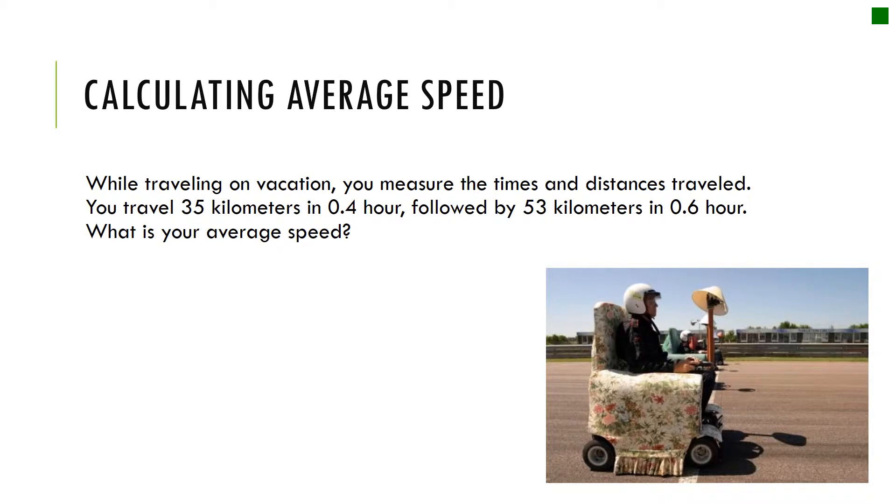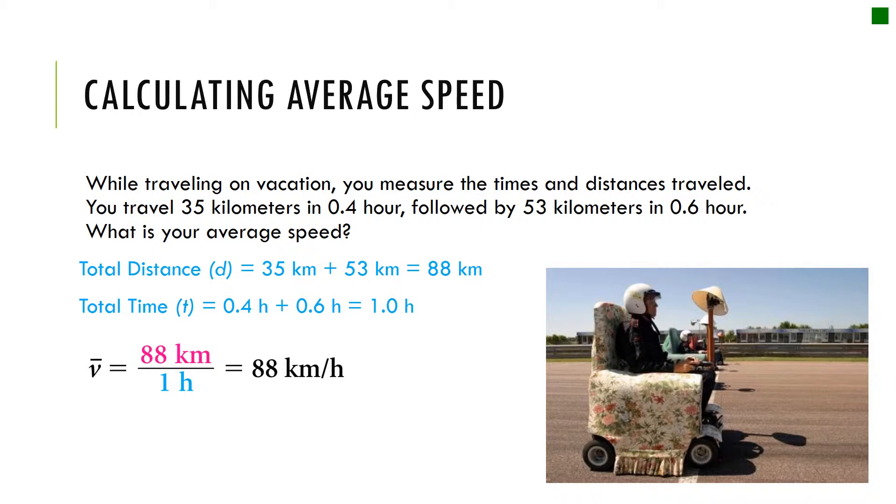I want you to pause the video and use that average speed equation you just wrote down and solve this. You're going to total up the distance which is 35 kilometers and 53 kilometers, and then total up the time which is 0.4 hours and 0.6 hours. Total these up, divide total distance over total time. You should have gotten 88 kilometers divided by one hour, so your final answer should have been 88 kilometers per hour.